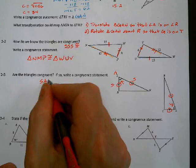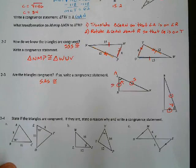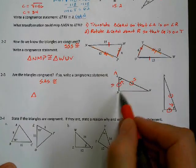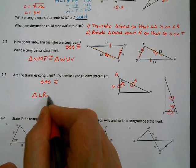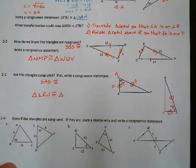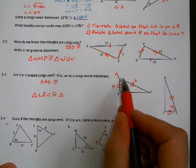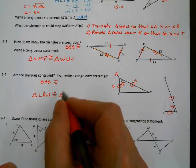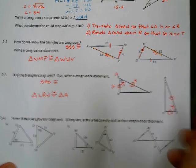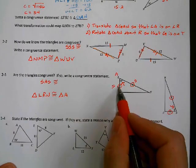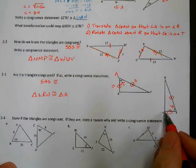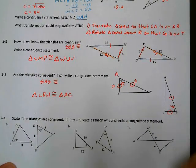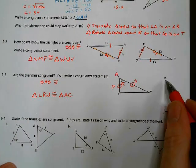Now for the congruent statement: the first triangle I'll call LRN. For the second triangle, the order matters. L is the angle marked congruent, and A is the corresponding angle. R is between two tick marks, and C is between two tick marks, so R and C correspond. N is between one tick mark and blank, and B is between one tick mark and blank. So triangle LRN is congruent to triangle ACB.